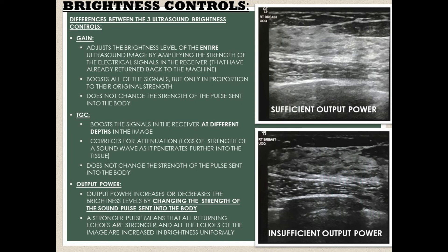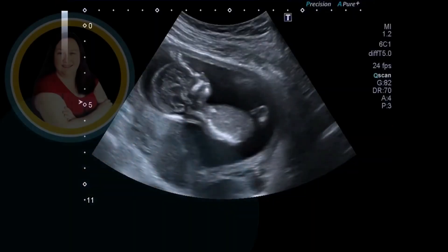When adjusting these brightness controls, always keep in mind the ultrasound safety principle of ALARA — as low as reasonably achievable. These same brightness levels could be achieved by adjusting the TGC or the gain, neither of which change the strength of the sound pulse that's sent into the body.